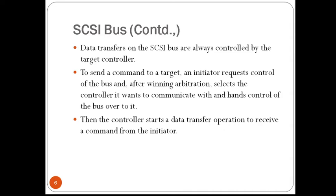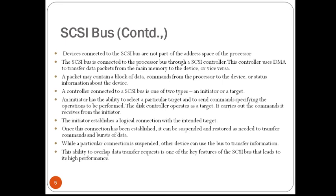The controller connected to a SCSI bus is either an initiator or a target. An initiator has the ability to select a particular target and send commands specifying the operations to be performed. The controller on the processor side, such as the SCSI controller shown in figure 4.38, must be able to operate as an initiator, while the disk controller operates as a target and carries out the commands received from the initiator. The initiator establishes a logical connection with the intended target device. Once this connection has been established, it can suspend and restore the connection as required to transfer commands and bursts of data. When a particular connection is suspended, other devices can use the bus to transfer information.